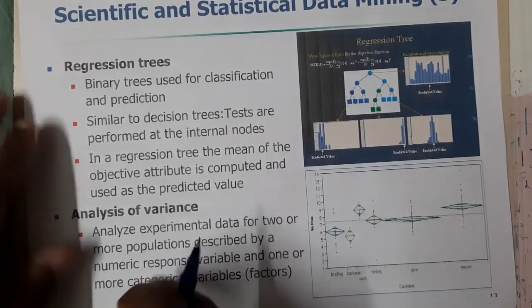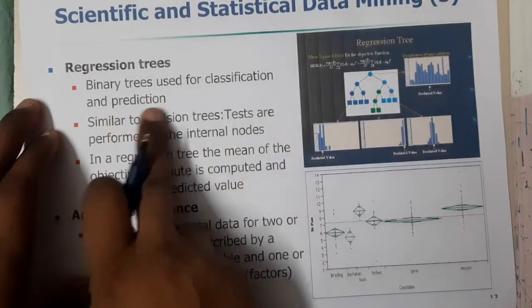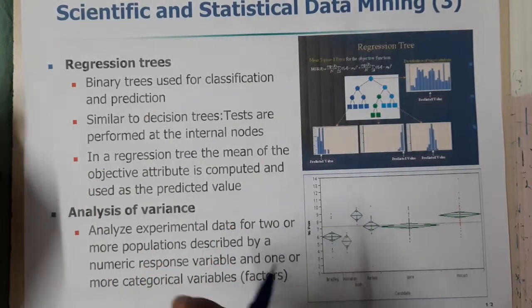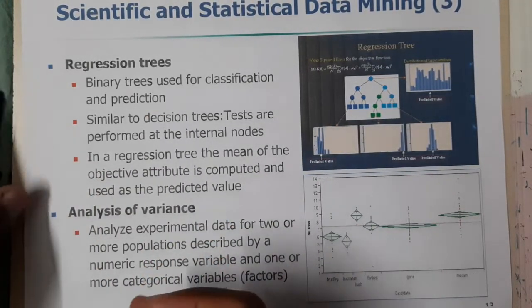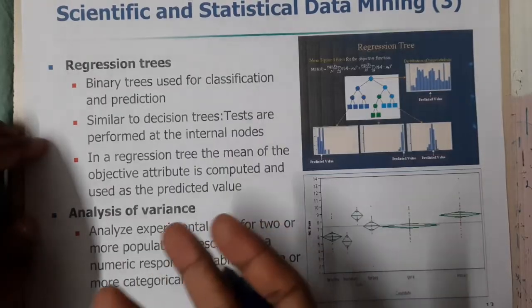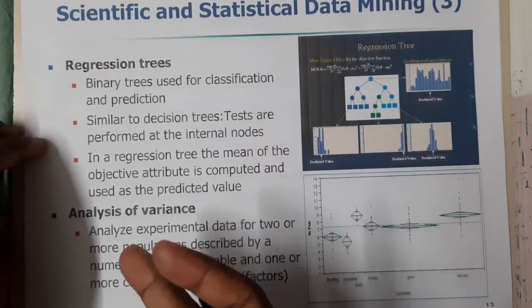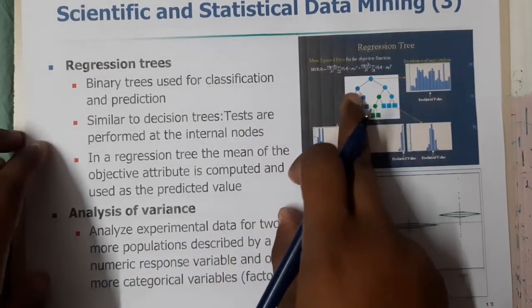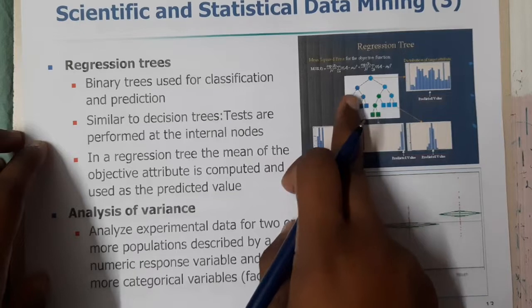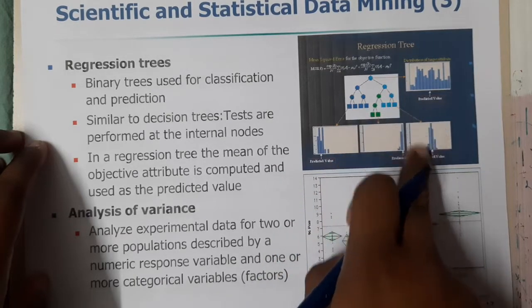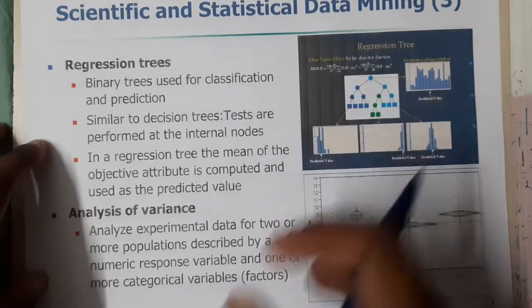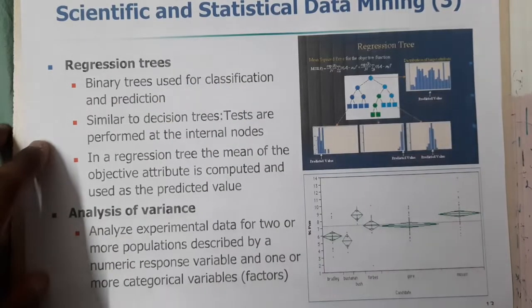Binary trees are used for classification and predictions. So regression is a concept of prediction. Using trees, if we are doing prediction based on some conditions — here there is a tree with conditions, if a condition is true you go one way — based on that flow you do the process. That is called regression trees.